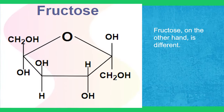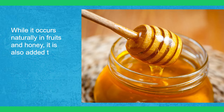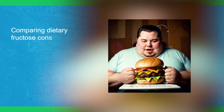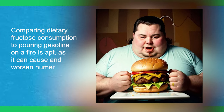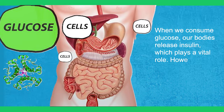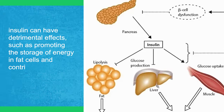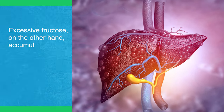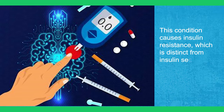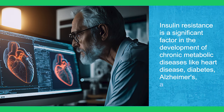Fructose, on the other hand, is different. Unlike glucose, fructose is not essential for survival. While it occurs naturally in fruits and honey, it is also added to many processed foods and sweetened beverages in the form of high-fructose corn syrup. Comparing dietary fructose consumption to pouring gasoline on a fire is apt, as it can cause and worsen numerous health conditions. When we consume glucose, our body releases insulin, which plays a vital role. However, in large amounts, insulin can have detrimental effects such as promoting the storage of energy in fat cells and contributing to weight gain. Excessive fructose accumulates in the liver and can lead to fatty liver disease. This condition causes insulin resistance, which is a significant factor in the development of chronic metabolic diseases like heart disease, diabetes, Alzheimer's, and cancer. The prevalence of these chronic diseases places a considerable burden on our healthcare system.